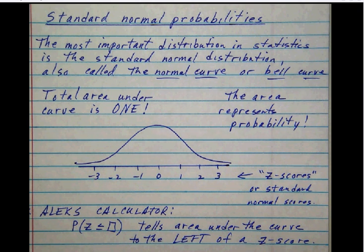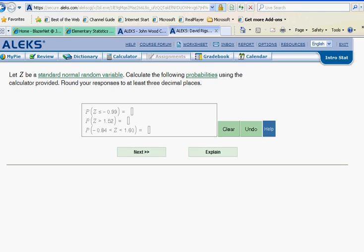This button tells us the area under the curve to the left of a particular Z score. So let's look at our first problem. The very first problem asks us for the area, so read this, the area or find the area under the curve to the left, notice that's a less than sign, of a Z score of negative 0.99.